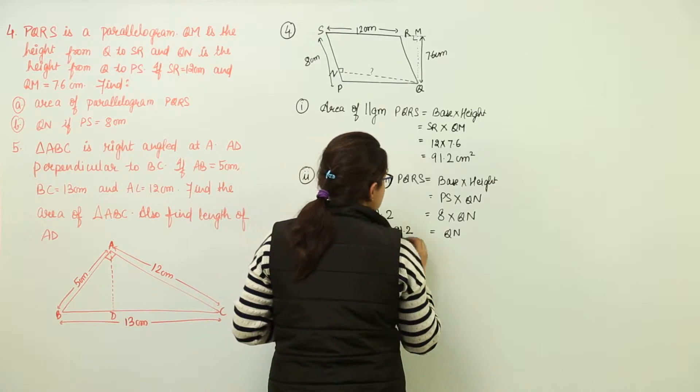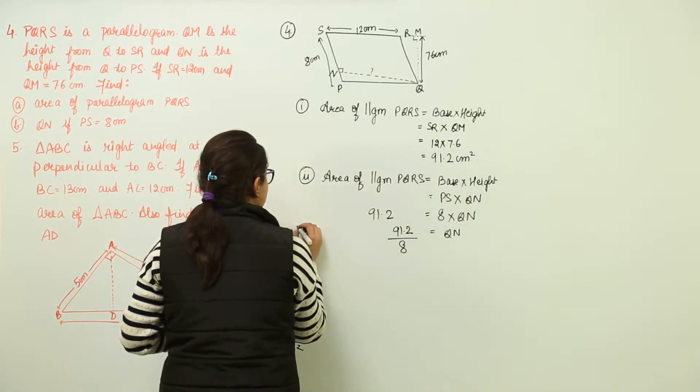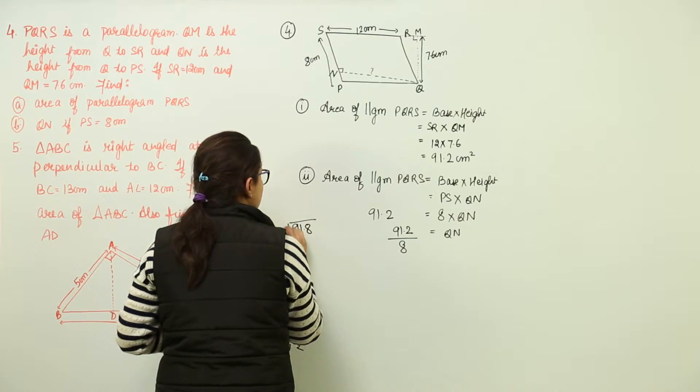On solving this, you will get, let us divide it, 91.8 with 8.